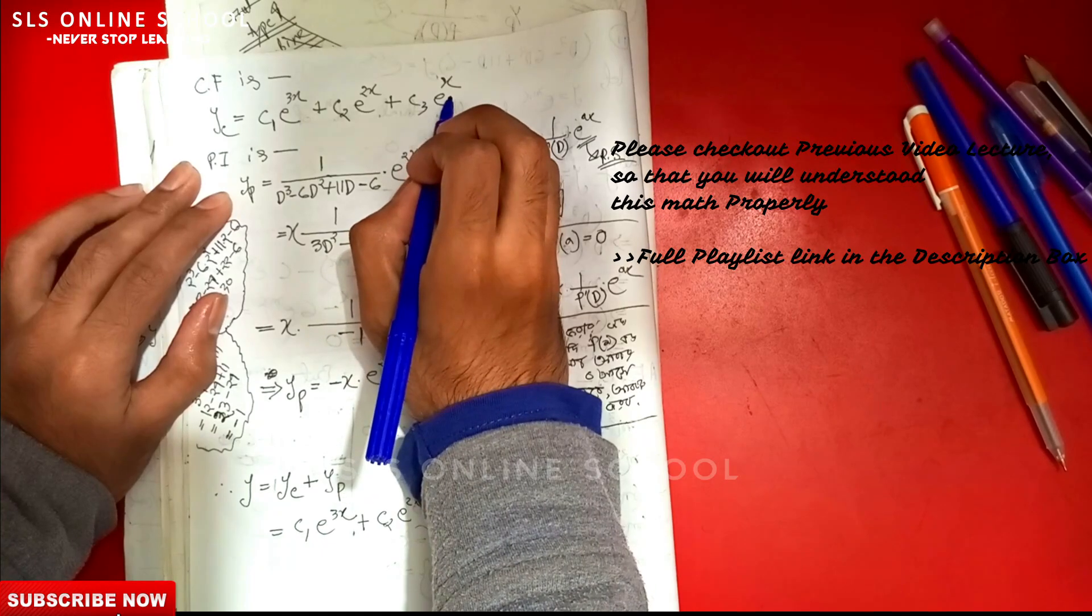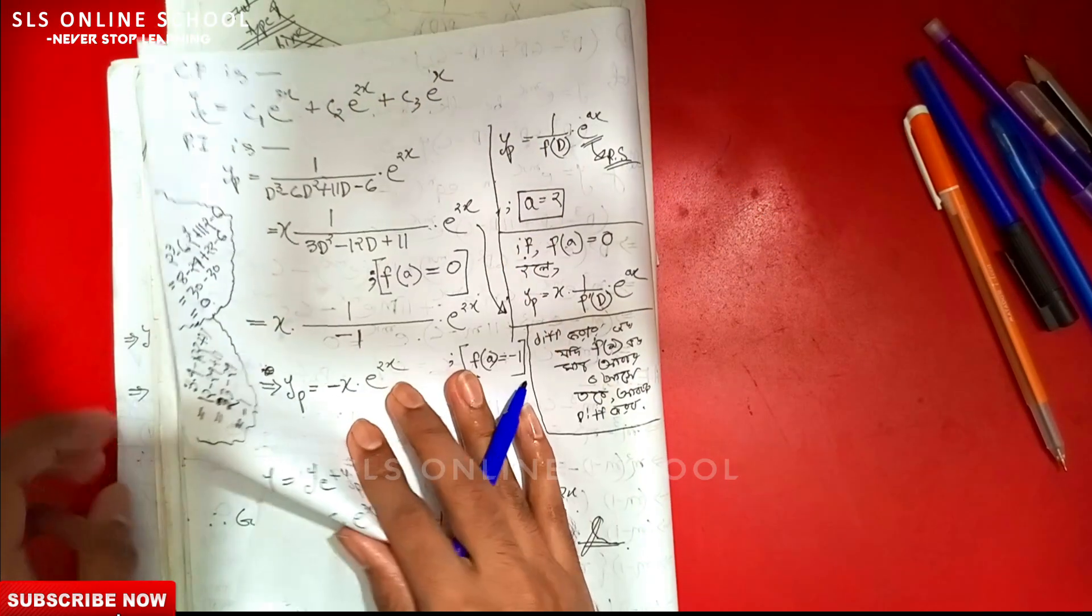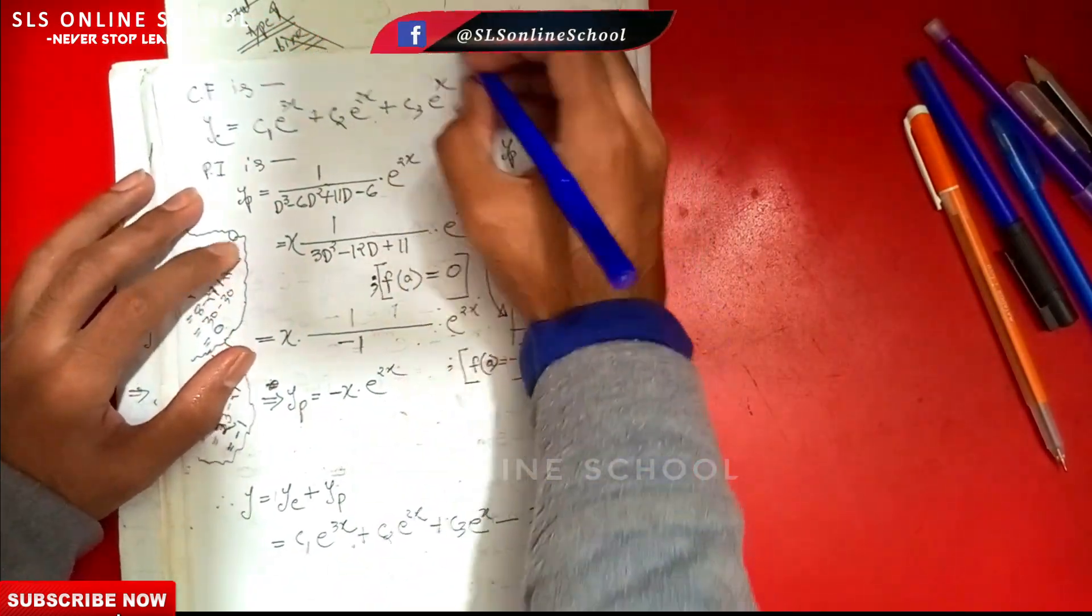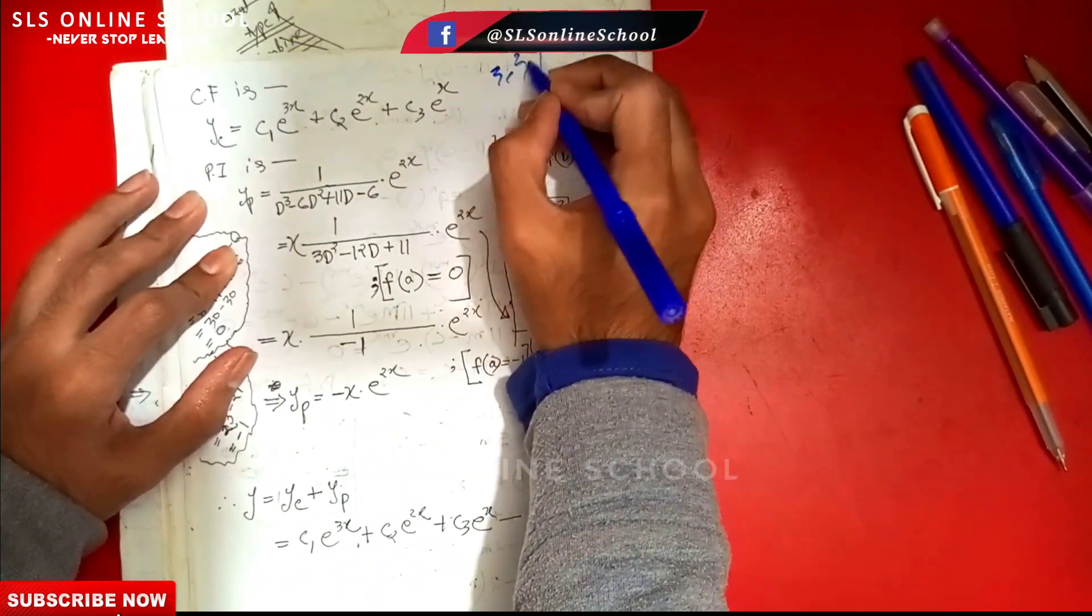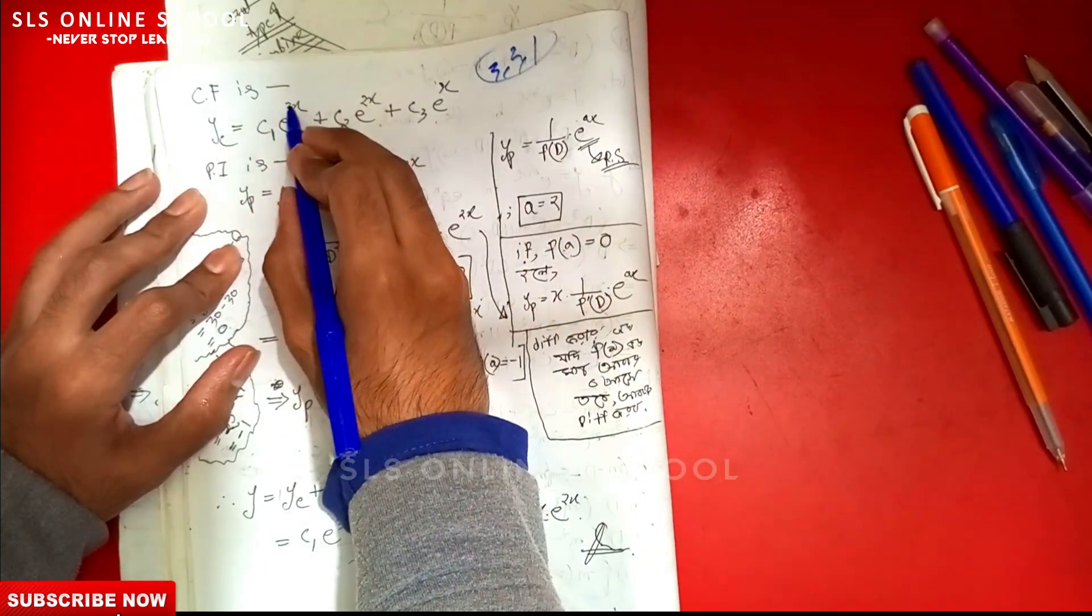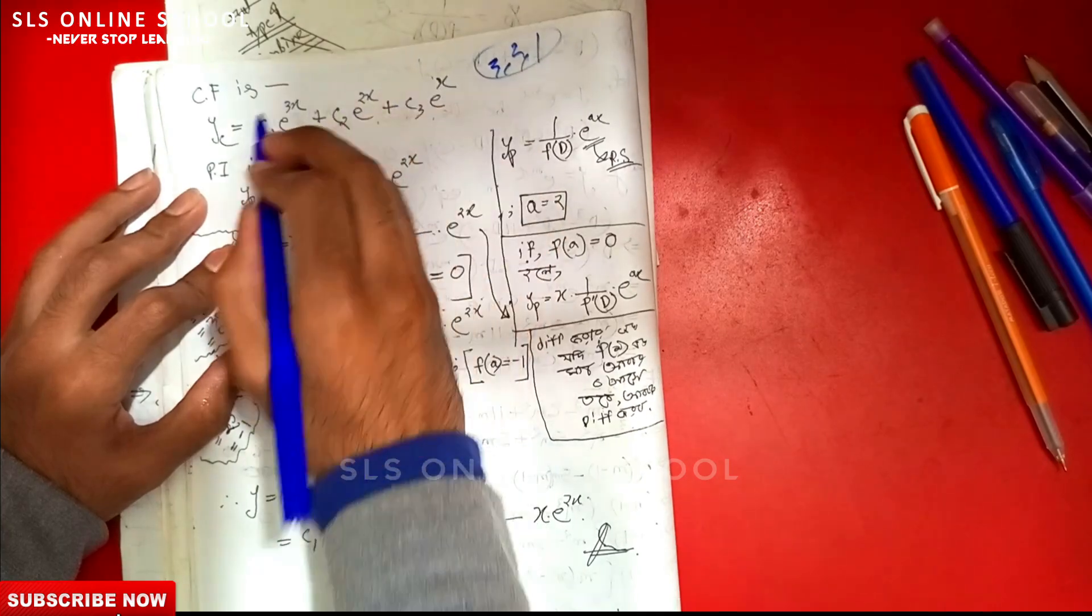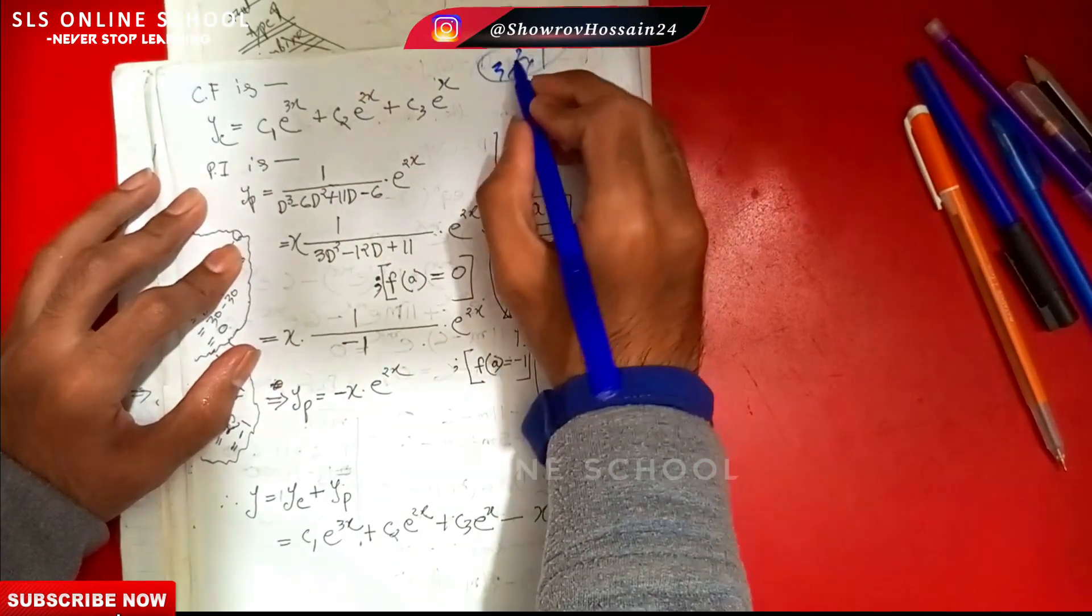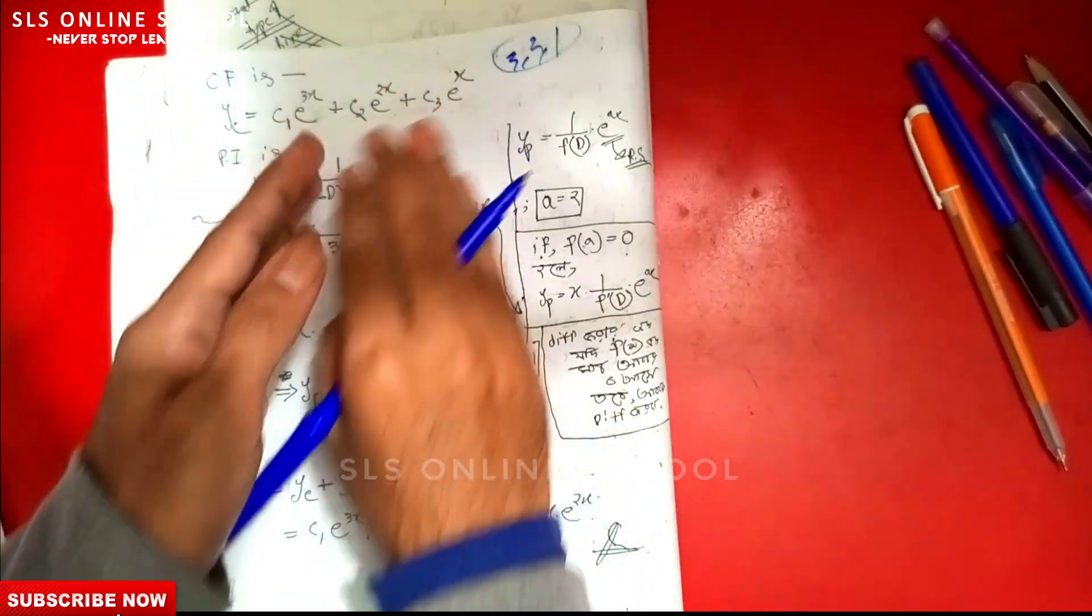We have three terms with coefficients c₁, c₂, c₃ and e^(mx) with m₁ = 3, m₂ = 2, m₃ = 1. These are different values.